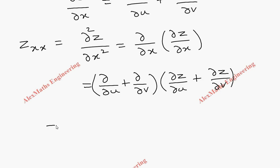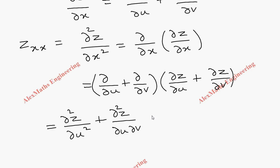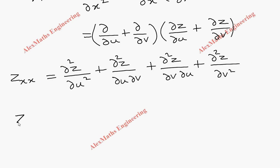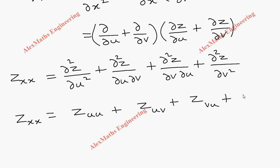Now let's expand and multiply: first term with first term gives ∂²z/∂u², first term with last term gives ∂²z/∂u∂v, then ∂²z/∂v∂u, and finally ∂²z/∂v². So zxx equals zuu plus zuv plus zvu plus zvv.